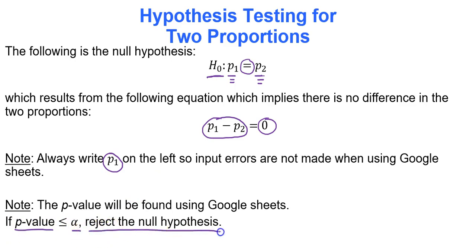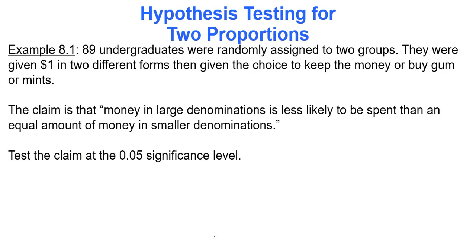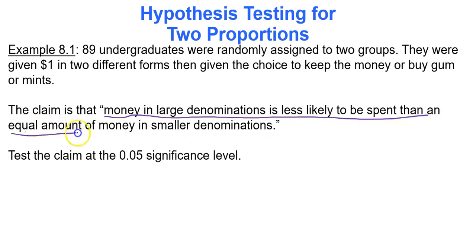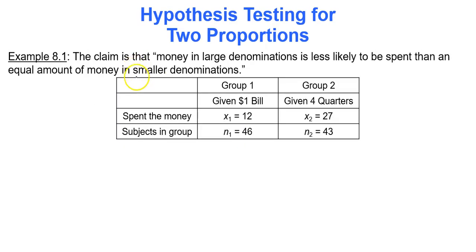We compare the p-value to alpha; if the p-value is less than or equal to alpha we reject the null hypothesis. Here's our first example: 89 undergraduates were randomly assigned to two groups, given a dollar in two different forms, then given the choice to keep the money or buy gum or mints. The claim is that money in large denominations is less likely to be spent than an equal amount in smaller denominations, tested at the 0.05 significance level.